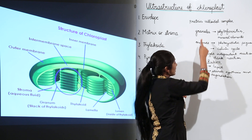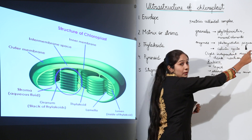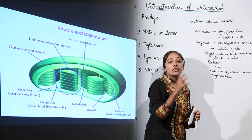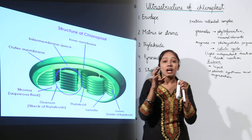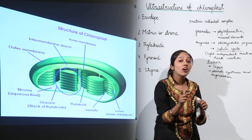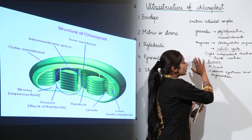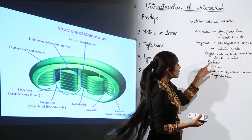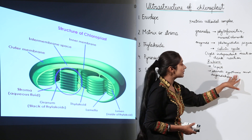The granules are present, the enzymes are present, and these enzymes perform very important functions — mostly in the synthesis of photosynthetic pigments and the Calvin cycle, which is the light-independent reaction. Just remember that food is also manufactured independent of light. This dark reaction is facilitated by the key enzyme rubisco, which is present in the matrix or stroma of the chloroplast.